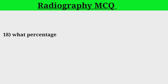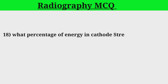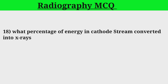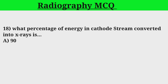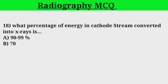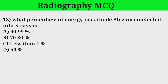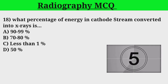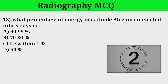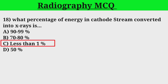Question 18. What percentage of energy in cathode stream is converted into X-rays? A. 90-99%. B. 70-80%. C. Less than 1%. D. 50%. Correct answer: C.